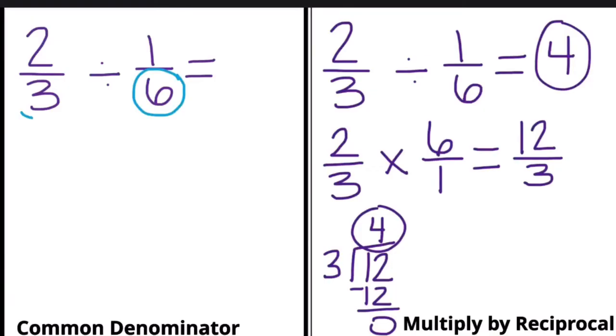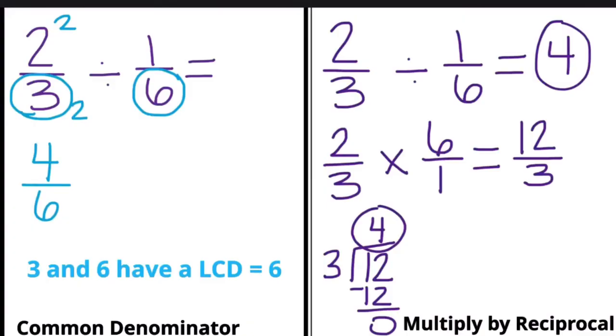For the common denominator we look at three and six. You should know that the least common denominator of three and six is six. So in order for me to create an equivalent fraction I have to multiply the numerator and the denominator by two. This gives me four-sixths. Then I divide that by one-sixth.